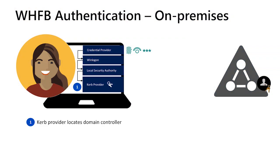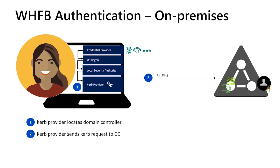In the on-premises case, because we want to authenticate to the domain controller with Kerberos instead of Azure AD, the ticket is passed to a component called the Kerberos provider instead of Cloud AP. The Kerberos provider will use a domain hint to locate a domain controller acting as the Key Distribution Center, or KDC, role in the Kerberos protocol. It will use the ticket to sign Kerberos pre-authentication data with the user's Windows Hello for Business private key. The provider then sends the signed pre-authentication data to the domain controller along with a certificate for the user's Windows Hello for Business public key in a message known as an AS-REQ.